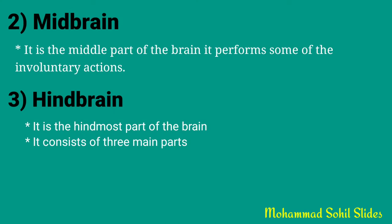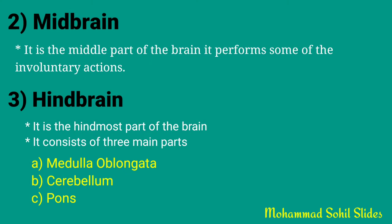The last part is the hindbrain, which is the hindmost part of the brain. It consists of three main parts: medulla oblongata, cerebellum, and pons. The medulla oblongata controls involuntary actions such as heartbeat, breathing, and blood circulation. The cerebellum coordinates voluntary movement and maintains the balance of the body — for example, riding a bicycle, running, and exercise.